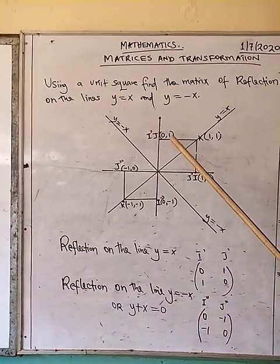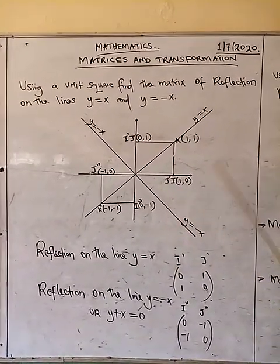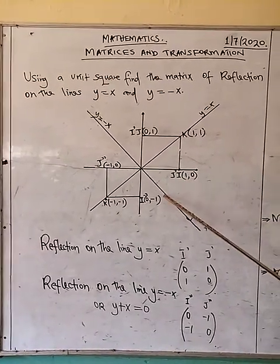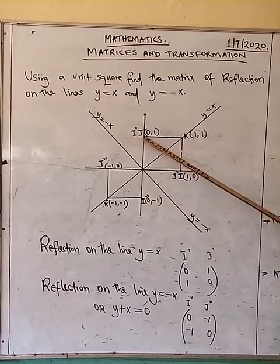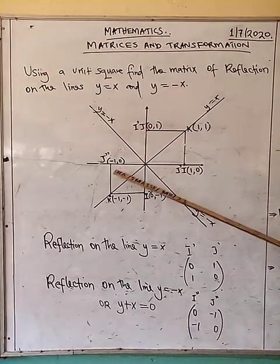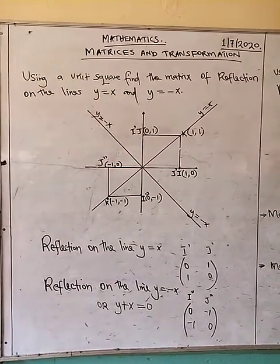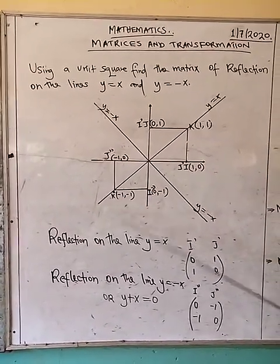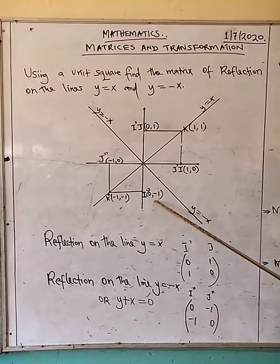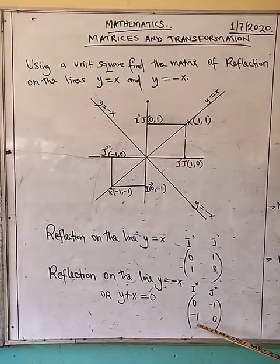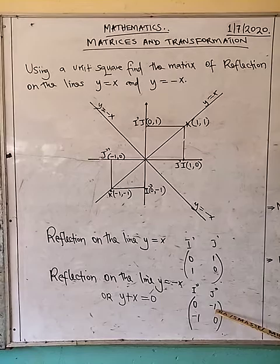When we reflect the unit square — the i coordinate, the j coordinate, and of course the k — along the line y equals negative x, the i' will be at this particular point. When we reflect the coordinate of j along the line y equals negative x, j' will be at the point (negative 1, 0). And of course k will be reflected here at (negative 1, negative 1). We consider the i double prime and the j double prime. The i double prime is (0, negative 1), and the j double prime is (negative 1, 0).